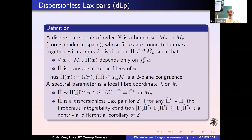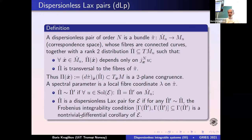Two Lax pairs are called equivalent if for any solution they are actually equal as distributions on jets when U is restricted — what is called on-shell. The planes have to coincide. We call a Lax pair dispersional if for any Lax pair which is equivalent to this one, the Frobenius integrability condition — that this distribution is integral — is a non-trivial differential corollary of system E, of our PDE system. The important word here is non-trivial: it could be a corollary, but if you change the Lax pair a bit off-shell and it becomes trivially integrable, then it cannot be used for integration.